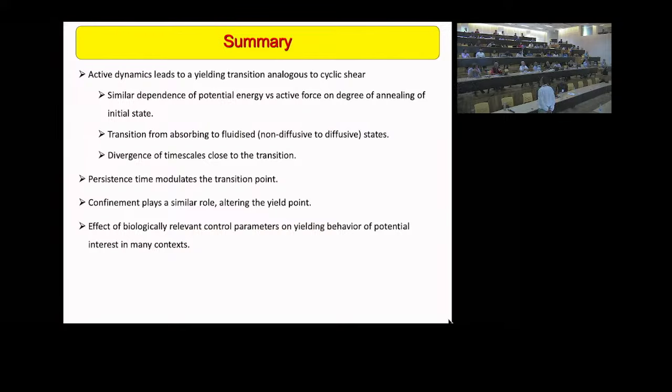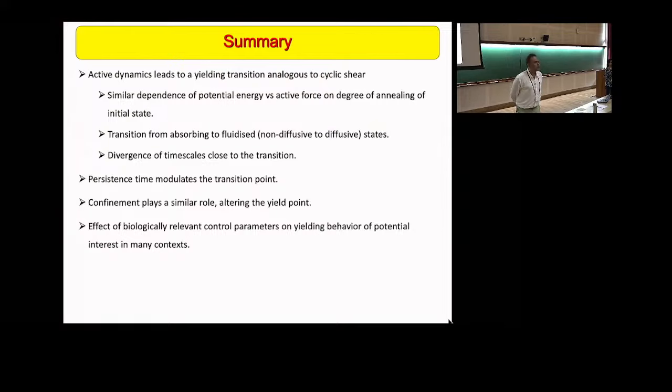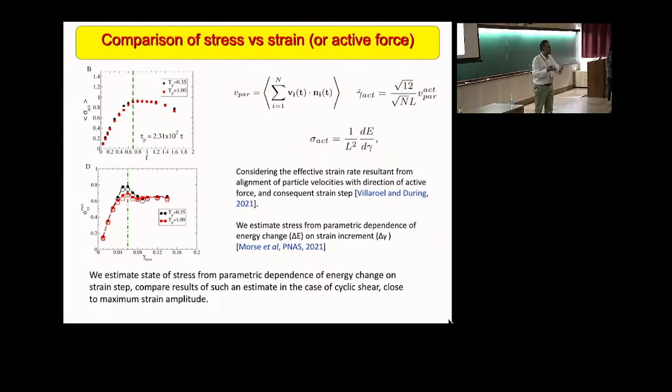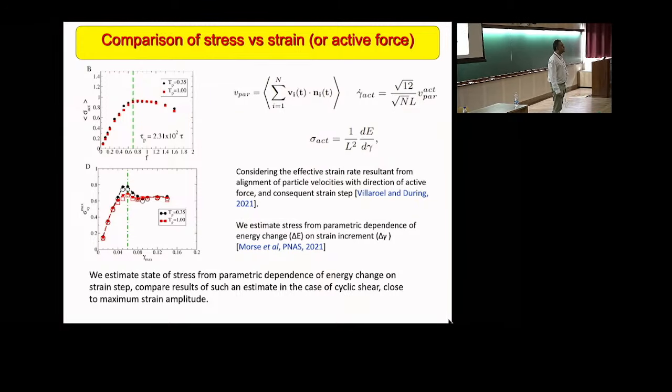It would be nice to know if there are distinctive features of the active yielding as distinct from the oscillatory shear yielding. You talked a lot about the similarities. You may have said something about the differences I didn't catch. So the one big difference, which we don't understand at the moment, is when you look at the stress strain curves, you don't see the expected dependence on the annealing state of the glass. And also, you don't find familiar features like stress drops. Somehow, the way it's being forced is by random persistent moves.